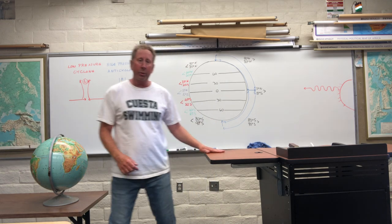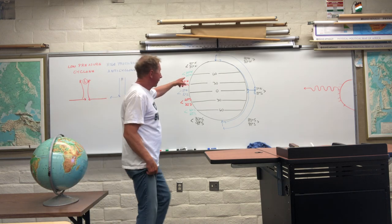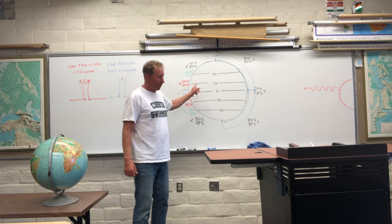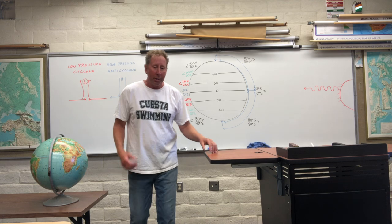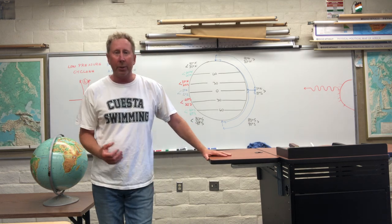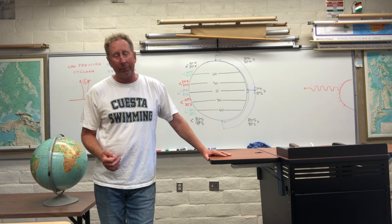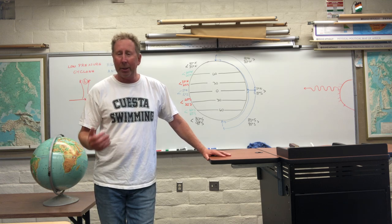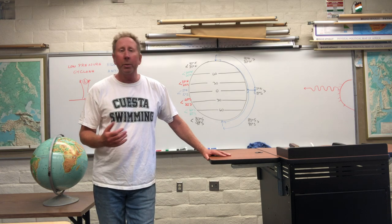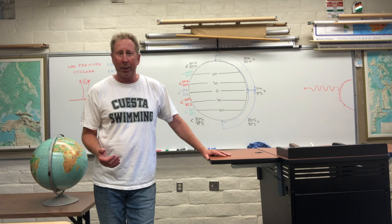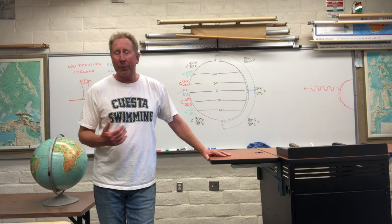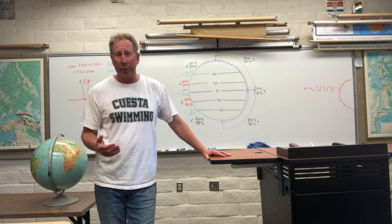I'm going to do something for you called the model of atmospheric pressure and wind. Models attempt to duplicate reality in some form. If you've had economics, you've probably had lots of models introduced to you — models about spending habits and saving habits. They're trying to duplicate human behavior to try to facilitate understanding. So my model is going to try to facilitate some sort of understanding for you of how the winds and pressure belts work on our planet.